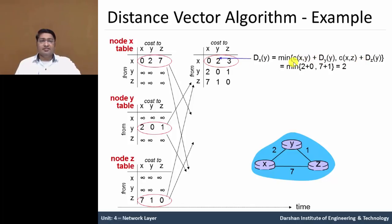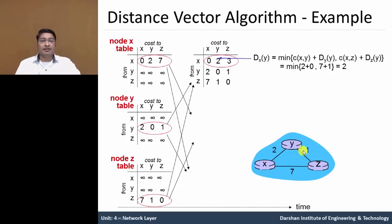To calculate d(x, y) using the Bellman-Ford equation: the cost c(x, y) from x to y is 2, plus d(y, y) which is 0; compared with cost c(x, z) which is 7, plus d(z, y) which is 1 — giving 8. So minimum of (2+0) and (7+1) is minimum of 2 and 8, which equals 2.